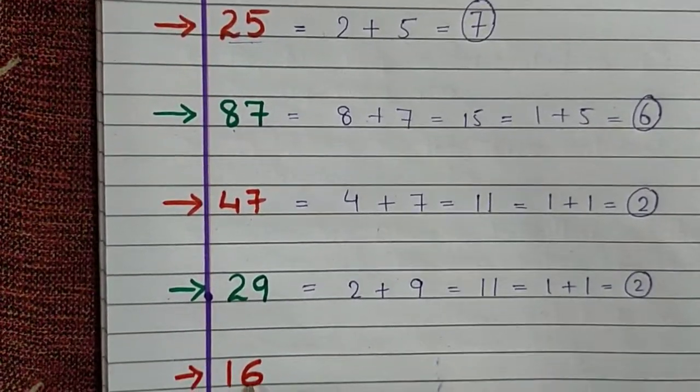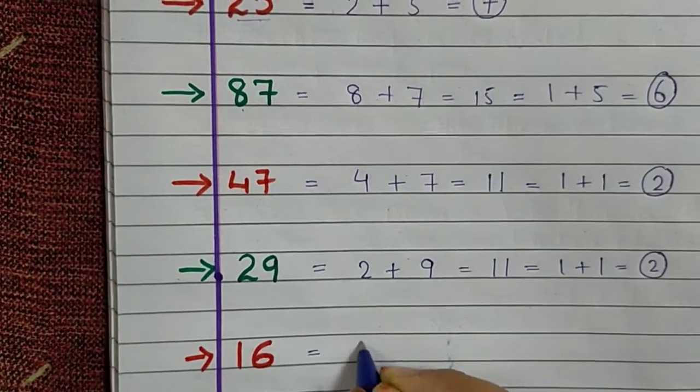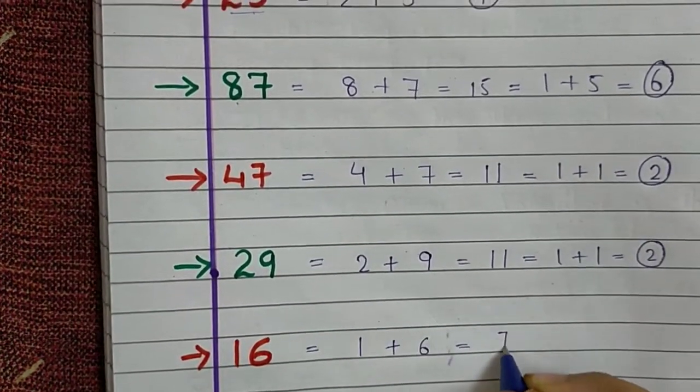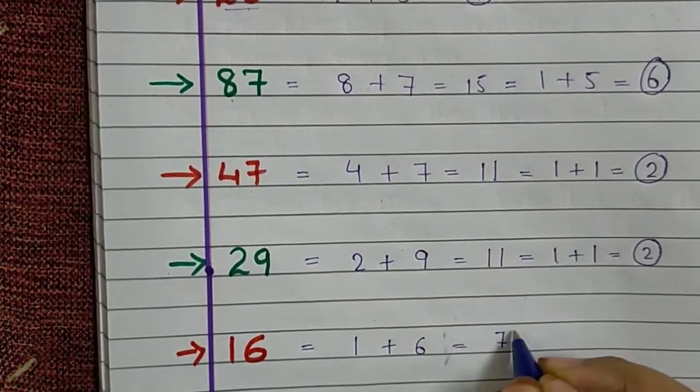The fifth number is 16. 1 plus 6 is equal to 7. Beejank of 16 is 7.